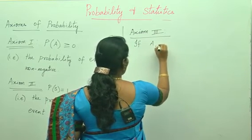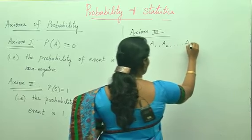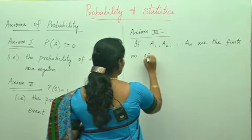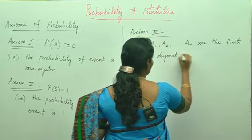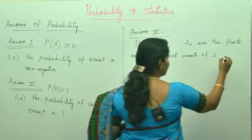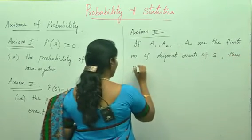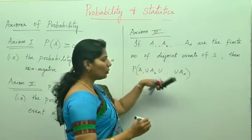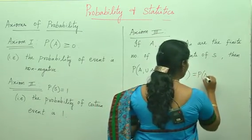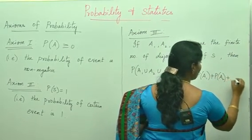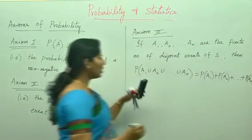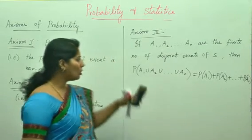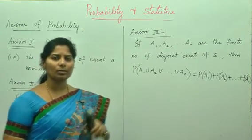If A1, A2, A3, and so on An are the finite number of disjoint events of S, then P(A1 union A2 union A3... union An), which can be written as P(A1) plus P(A2) plus so on plus P(An). That is, the probability of the union of disjoint sets is equal to sum of the probabilities of the events themselves. So this is one of the important axioms we will be using it for all the theorems and for all the problems.